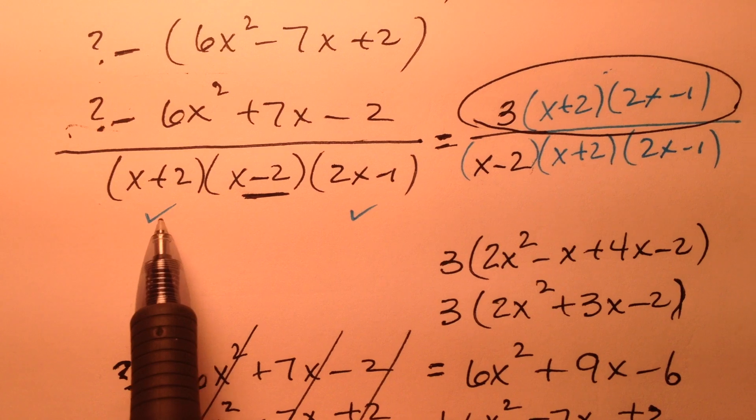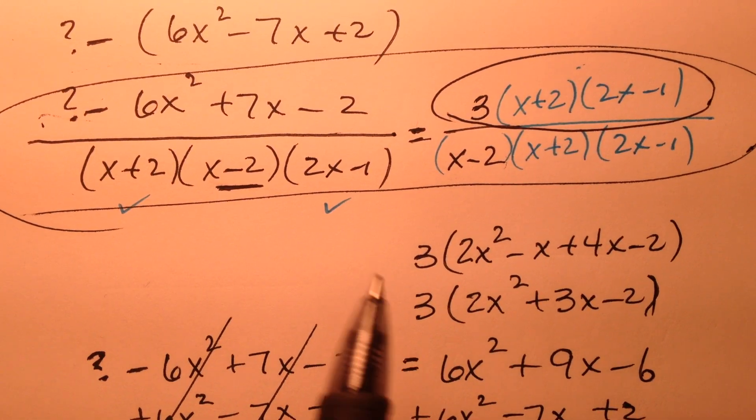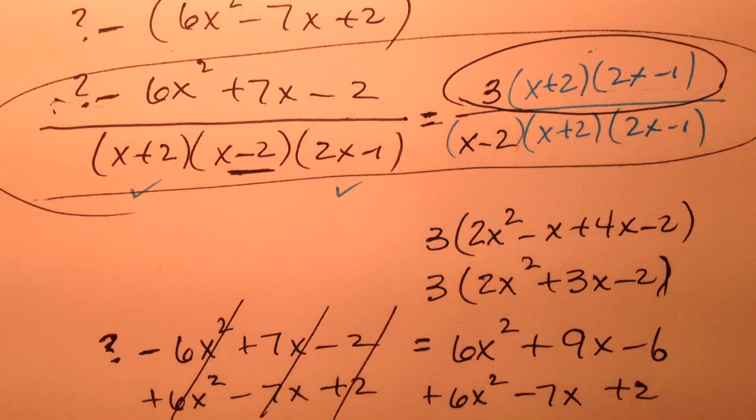Once I do that, then I'm left with a situation right here, and then I'm just ready to solve. I just need to set these two numerators equal to each other.